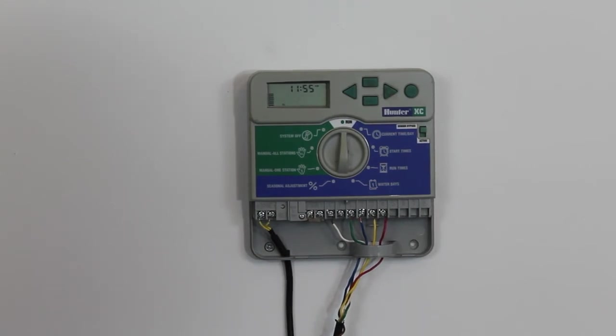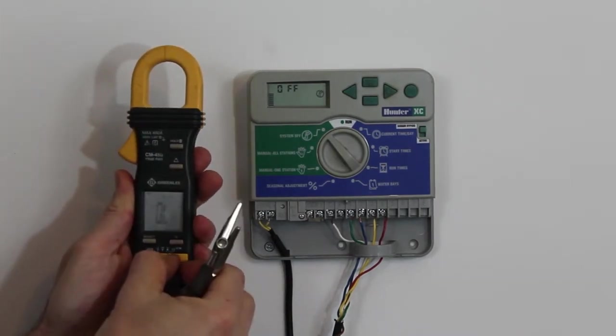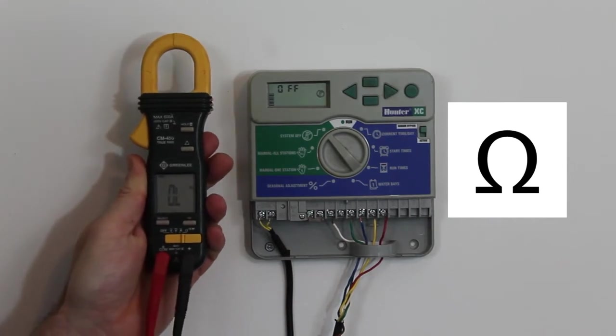So we're going to get prepared here to take some resistance readings. The first thing we want to make sure is that there's no voltage going on in the timer. We're going to take our multimeter and change it to the resistance setting, and that's the little Greek omega symbol.